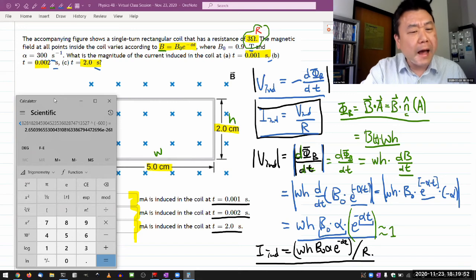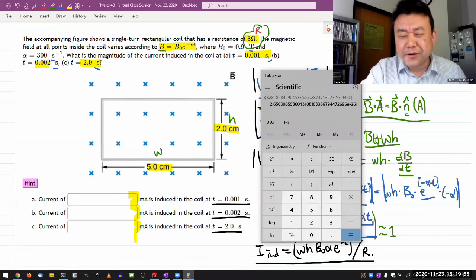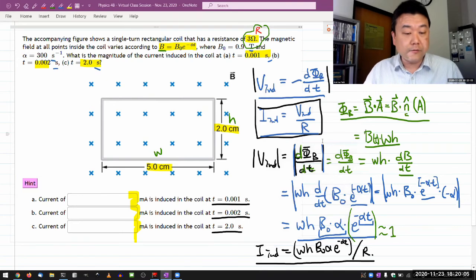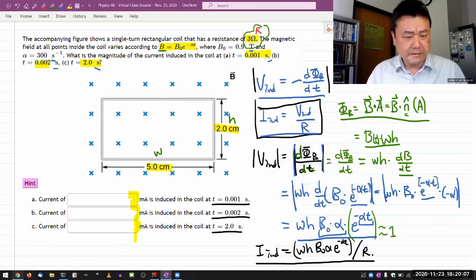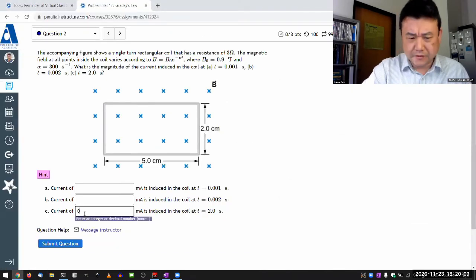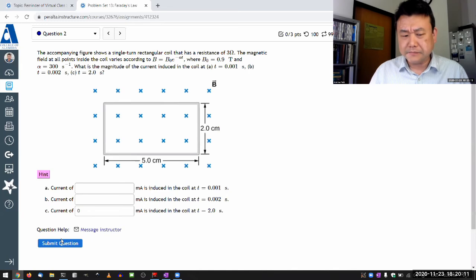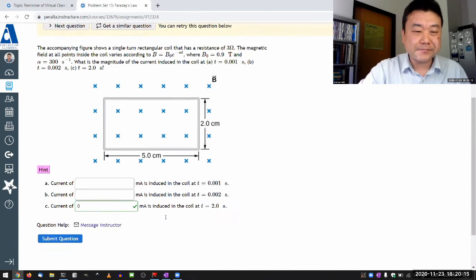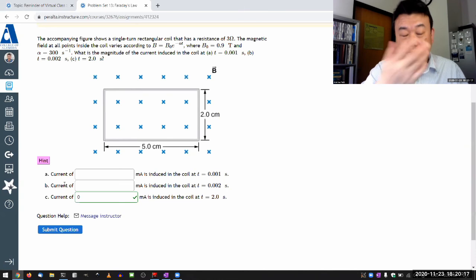I forget how I programmed this. It's possible if you plug in zero, it'll say it's correct. So t equals two seconds with this time scale is basically the equivalent of waiting for infinity. Let me give that a try, see if zero is accepted as correct. Could easily be. Yeah. So, and for A and B, you'll have to plug in the real numbers to get the real answer.